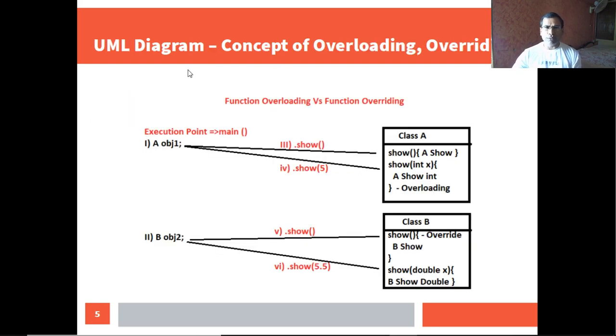UML diagram that I am going to implement: First I design a class A having two show functions. In first there is no parameter but in second we have a parameter, so it's overloading.